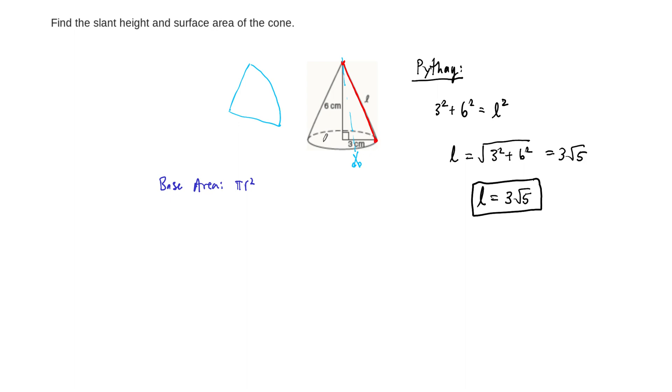A sector of a circle, and we know that this length is r, this length is L. And so it turns out that the area of the face, I'm just going to call it the face, this is always equal to pi times r times L. So pi r L.